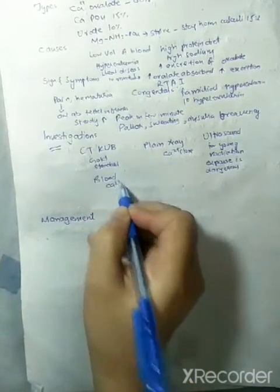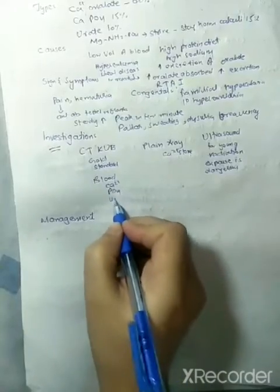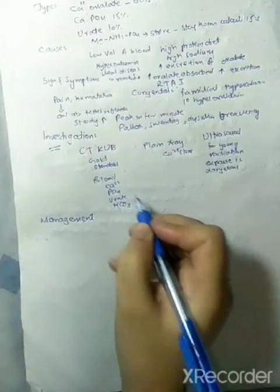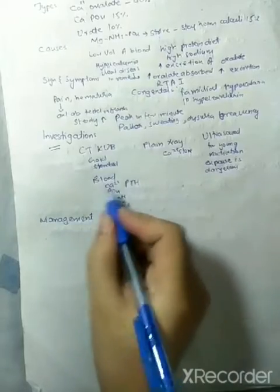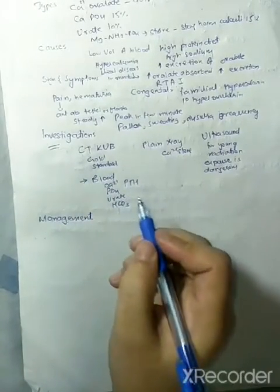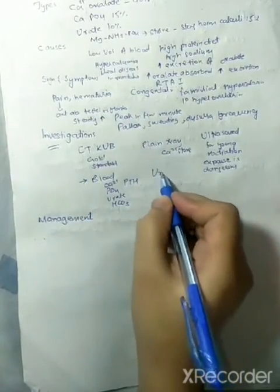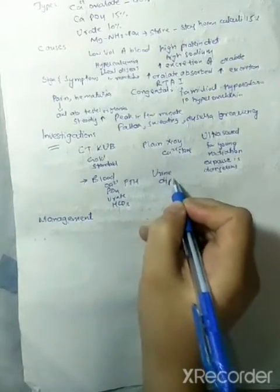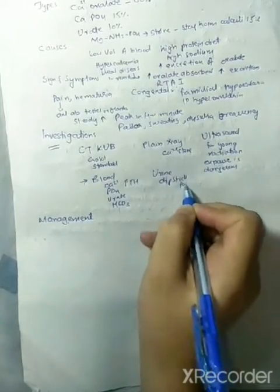Blood levels of calcium, phosphate, urate, bicarbonate, PTH - all these levels are also measured. Similarly, we will do urine dipstick for proteins.